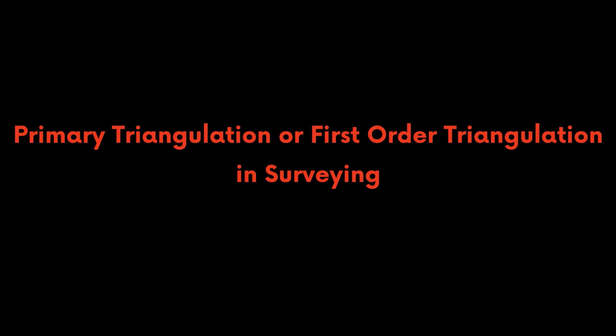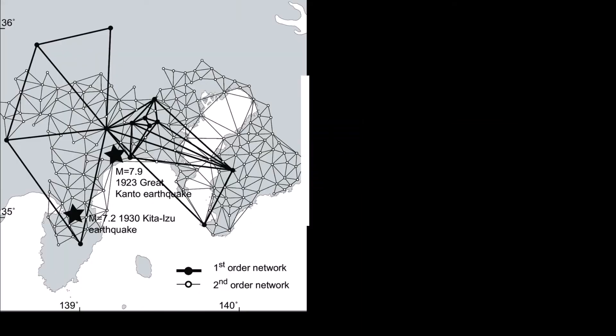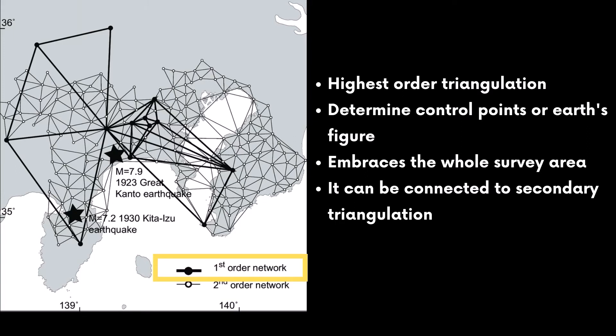Secondary triangulation and tertiary triangulation. Primary triangulation are called first order triangulation in surveying. It is the highest order of triangulation performed to determine the control points or earth's figure. It embraces the whole surface area under consideration. It can be connected to secondary triangulation.